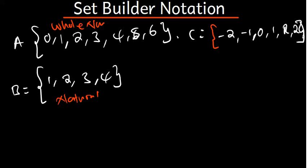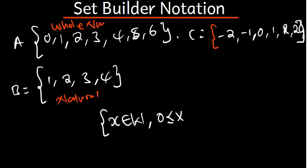I'll start with set M. We say x is a member of the whole numbers, represented by W. We are starting from zero all the way to six, so we write: 0 ≤ x ≤ 6. This means x must be a whole number between zero and six inclusive.